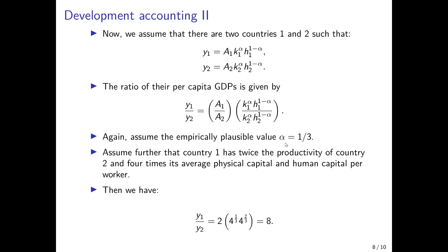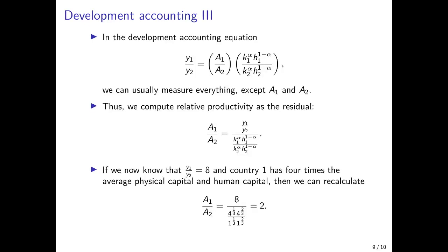We assume an empirically plausible value for alpha of one-third, as the long-run average for the United States through the 1970s and 1980s. For the sake of the argument, assume country 1 has twice the productivity level of country 2, and four times the physical capital intensity and human capital per capita. Normalizing country 2 to 1 and plugging in 2 for productivity and 4 for capital factors for country 1, we find that country 1 would have a GDP per capita eight times as high as country 2. This is a simple example of how we decompose cross-country income differences into the contributions of production factors.